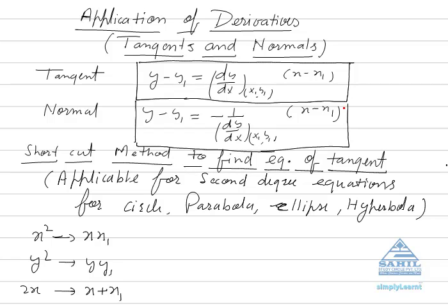There is a shortcut method to find the equation of tangent for second-degree equations. This means we can find the equation of tangent for circle, parabola, ellipse, and hyperbola — for all these curves there is only one process by which we can find it out.